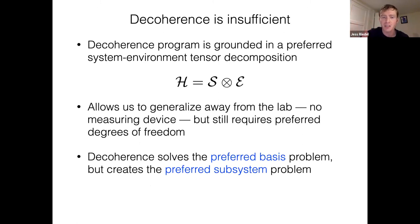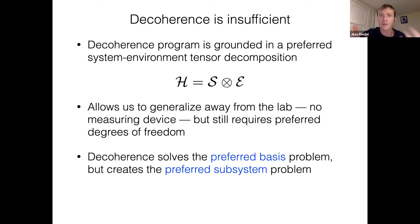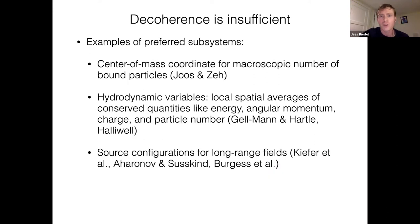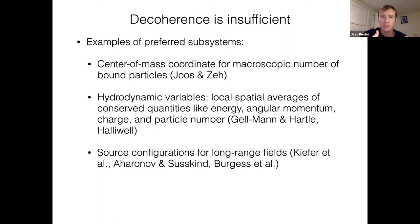Decoherence solves the preferred basis problem, but it creates the preferred subsystem problem — the subsystems of the universe. What is a double pendulum and how is that different from air? These are not encoded in the laws of the universe. The double pendulum is made of atoms; the air is made of atoms. Without a fundamental definition of what a system is, it is hard to give a fundamental definition of what branches are. Even with the decoherence story, we're left with the question of what are the subsystems that decohere? There's no good comprehensive theory of that, but this problem has been studied and there are some reoccurring examples of preferred subsystems.